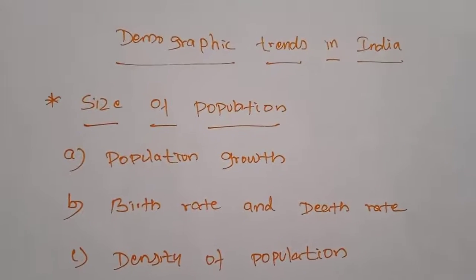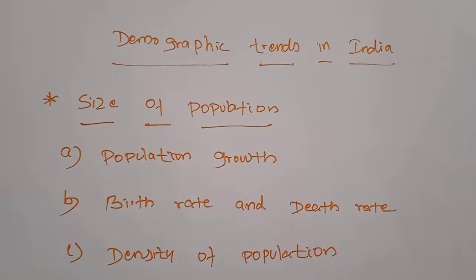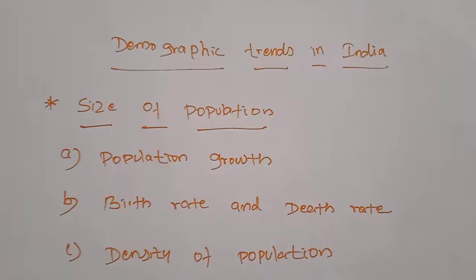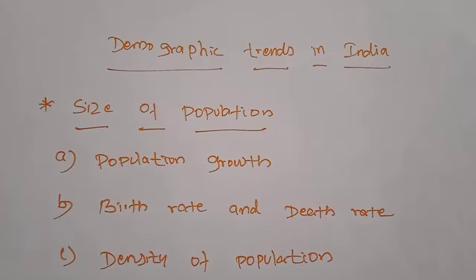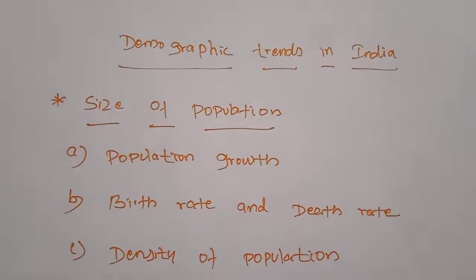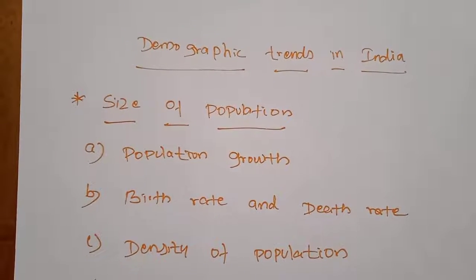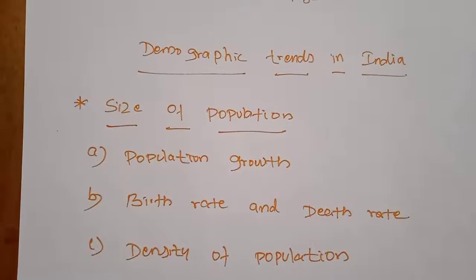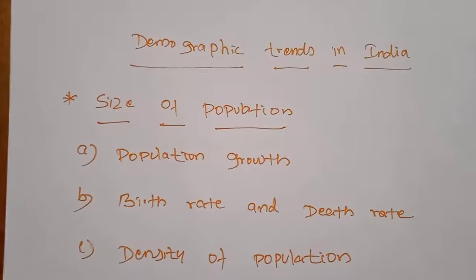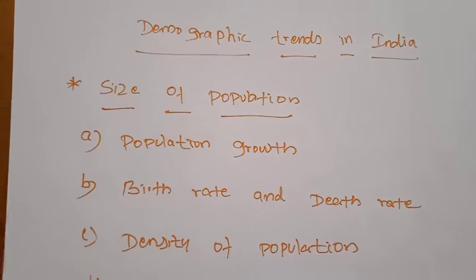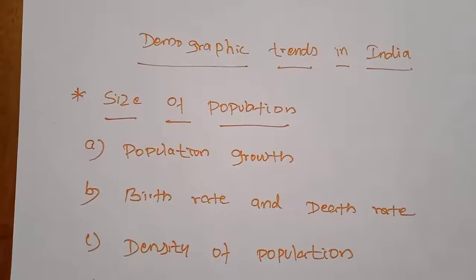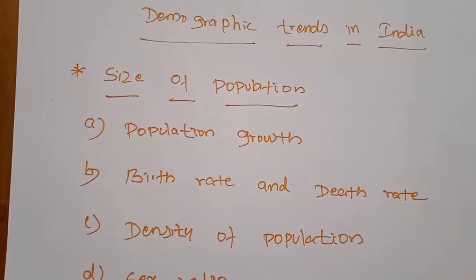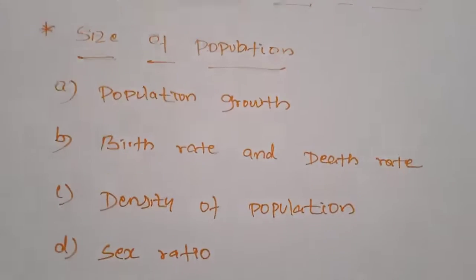Next, demographic trends in India. The scientific study of the characteristics of population is known as demographics. The various aspects of demographic trends in India are: size of population, rate of growth, birth and death rates, density of population, sex ratio, life expectancy at birth, and literacy ratio.